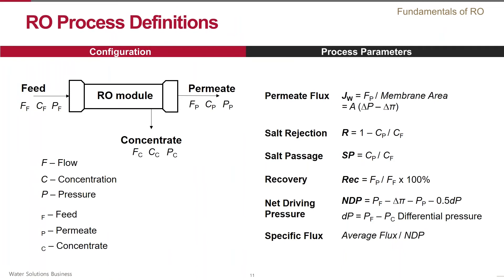In the most simplistic way, the RO process can be described by three flows: one incoming feed flow and two outgoing flows — permeate and concentrate. Each flow is characterized by its rate, pressure, and concentration of dissolved solids. The two major parameters that characterize the RO process are permeate flux — the ratio of the permeate rate to the membrane surface area Jw — and salt rejection, which is a relative measure of how much of the salt initially in the source water is rejected by the RO membrane. A closely related parameter is salt passage SP, which is simply one minus rejection — it indicates the amount of salts that remain in the permeate.